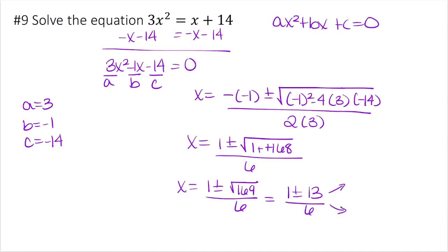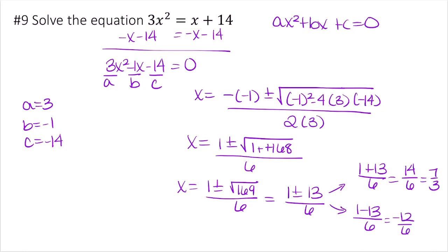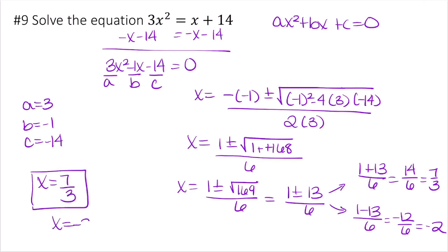Separating into two solutions: 1 plus 13 over 6 equals 14 over 6, which reduces to 7 over 3. And 1 minus 13 over 6 equals negative 12 over 6, which equals negative 2. So the two solutions are x equals 7 over 3 and x equals negative 2.